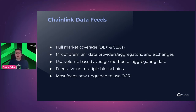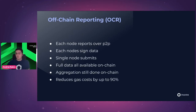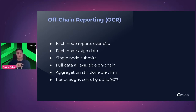Most feeds are now upgraded to use OCR — Off-Chain Reporting — which is important because it reduced gas costs by 90%. Previously, all node operators needed to submit individual transactions for their price reports. Now they communicate in a P2P network, and only the final consensus needs to be submitted on-chain via the OCR algorithm.